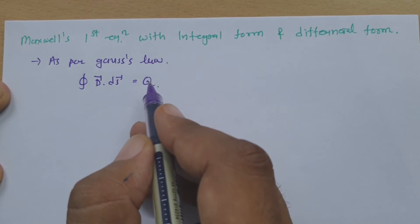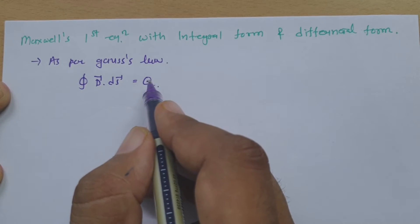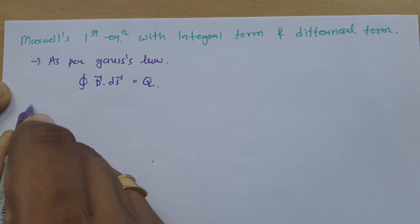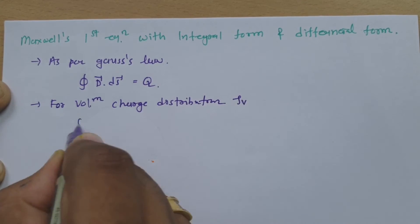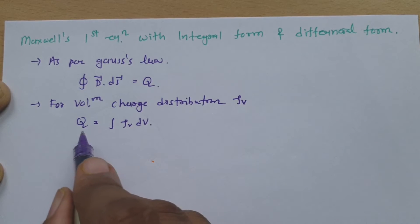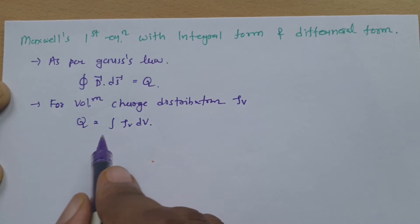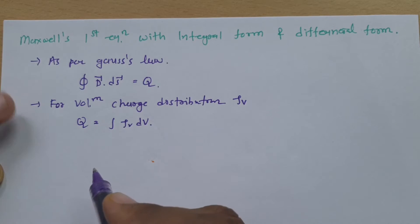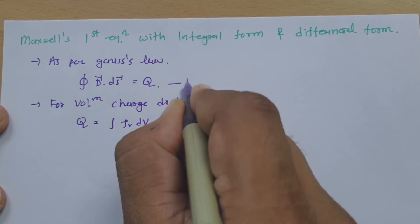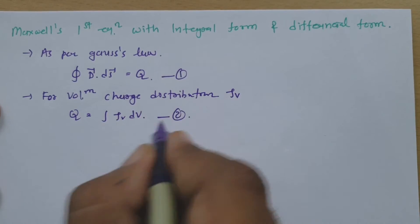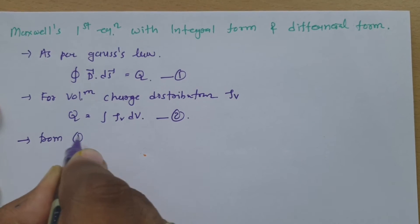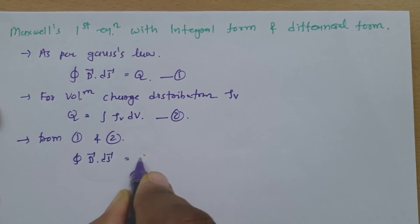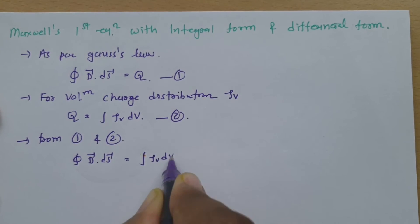If we consider this charge as a volume charge, then volume charge can be calculated based on volume charge density. For volume charge distribution, charge is equals to the volume integration of volume charge density. So total charge in volume charge distribution is the volume integration of volume charge density. We can consider these two equations for further derivation. From equation 1 and 2, we can say: enclosed surface integration of electric flux density is equals to volume integration of volume charge density.